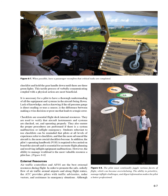It is necessary for a pilot to have a thorough understanding of all the equipment and systems in the aircraft being flown. Lack of knowledge — such as knowing if the oil pressure gauge is direct reading or uses a sensor — is the difference between making a wise decision or a poor one that leads to a tragic error. Checklists are essential flight deck internal resources, used to verify that aircraft instruments and systems are checked, set, and operating properly. They also ensure proper procedures are performed in case of system malfunction or in-flight emergency. The pilot's operating handbook (POH) is required to be carried on board and is essential for accurate flight planning and resolving in-flight equipment malfunctions. The ability to manage workload is the most valuable resource a pilot has.